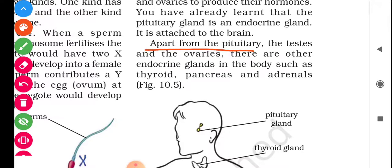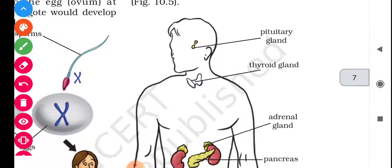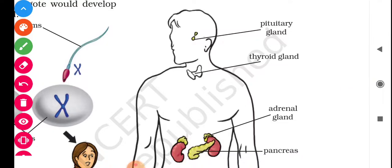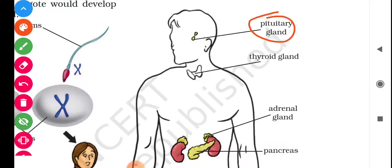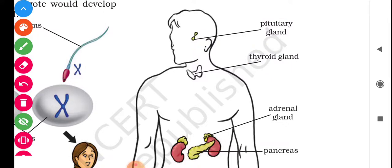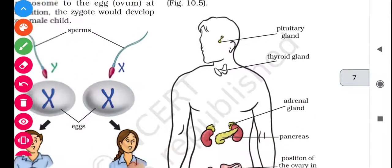Apart from the pituitary, the testes and the ovaries, there are other endocrine glands in the body such as the thyroid, pancreas, and adrenals. The thyroid gland is in our throat, the adrenal gland is above our kidney, and the pancreas secretes pancreatic juice.